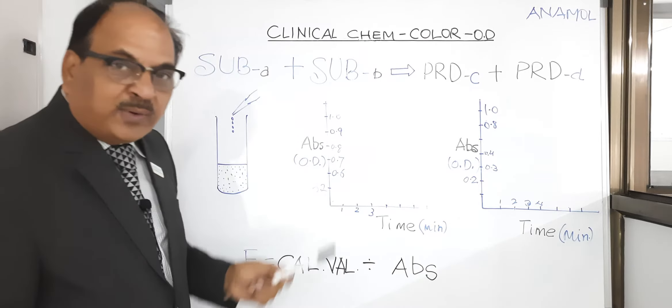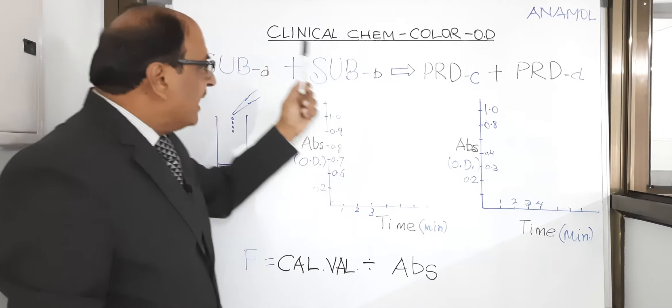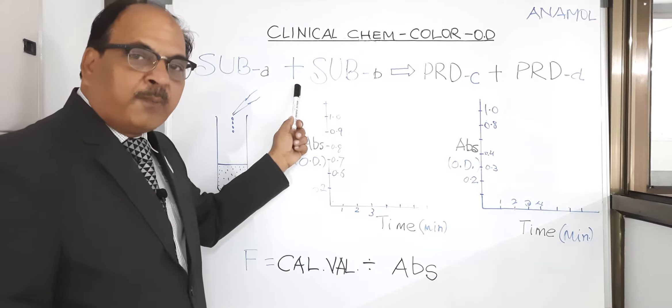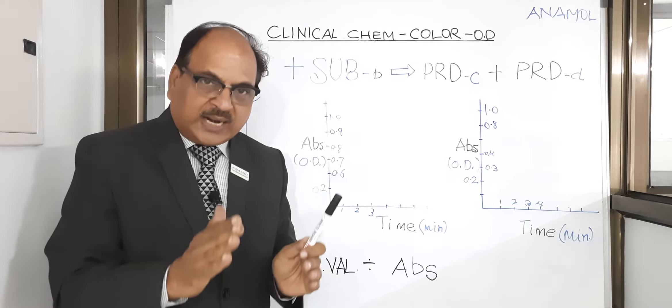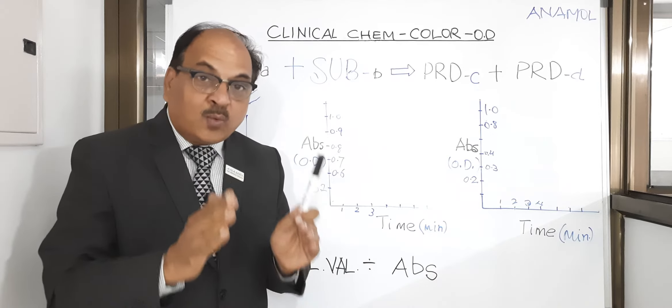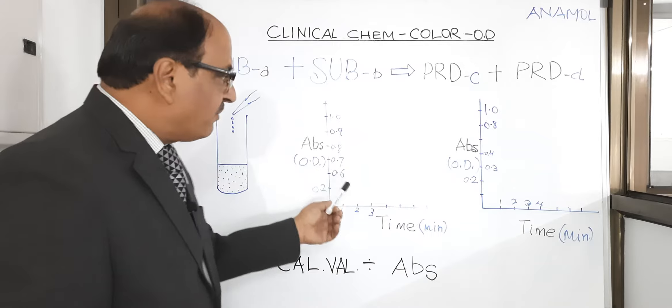Essentially, whenever you look into any technical insert in clinical chemistry, either substrate is a colored compound or product is a colored compound. Once you understand who is colored, you will immediately understand what kind of graph you will get.